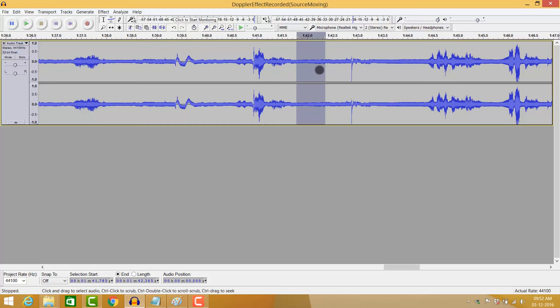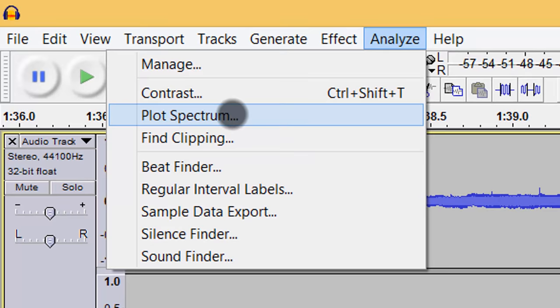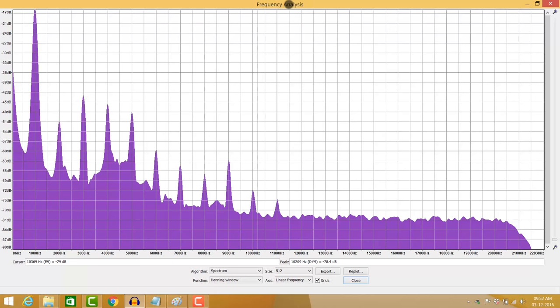So, what I'm going to do is, this is non-Doppler shifted 1000 Hertz frequency. I'm going to go to analyze, and I'm going to click on what is called plot spectrum. And when I do a plot spectrum, as you can see, you get what is called the frequency analysis, where on the x-axis, you have the frequencies, and on the y-axis, you have the amplitude.